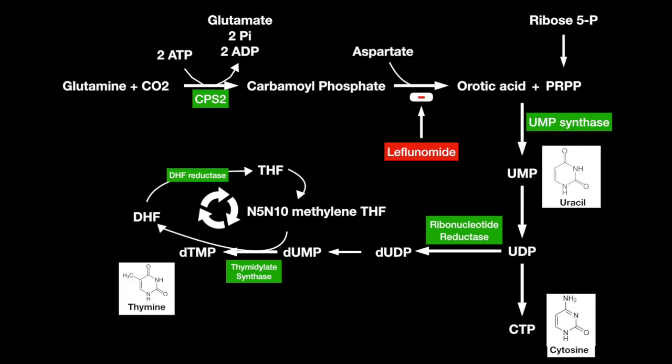The next drug, hydroxyurea, can inhibit ribonucleotide reductase, inhibiting the conversion from uridine diphosphate to deoxy-uridine diphosphate. With this drug, uracil and cytosine can still be produced, but not thymine.